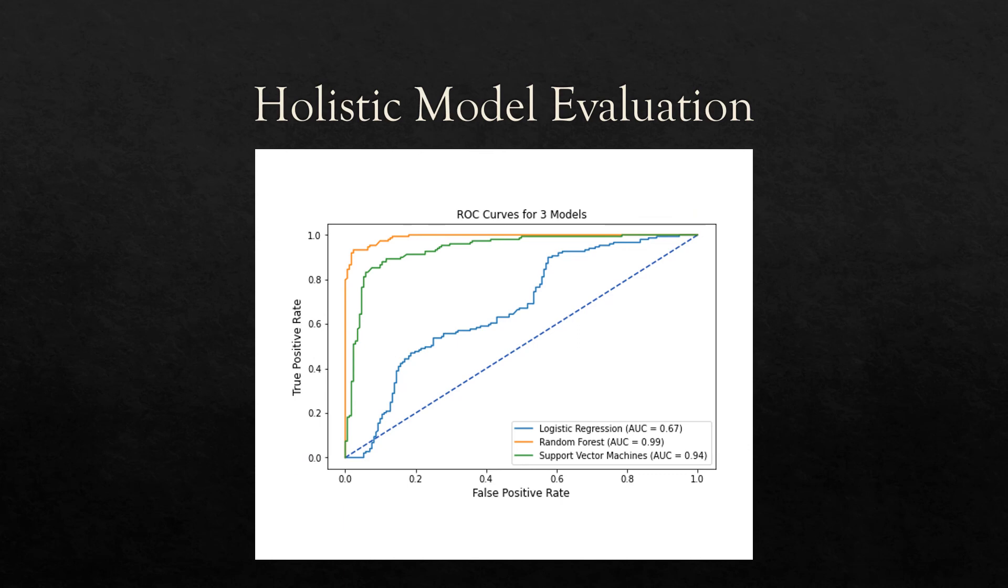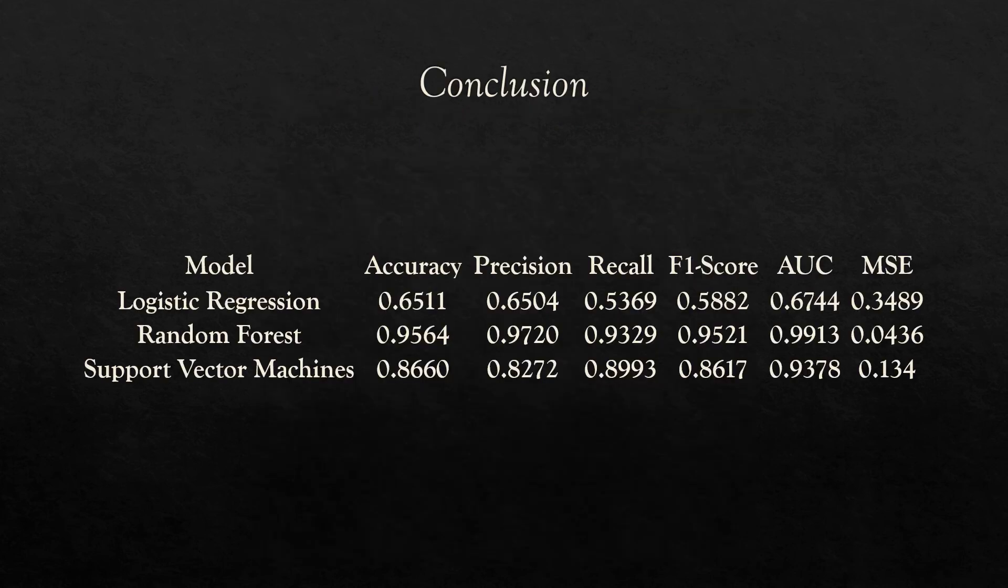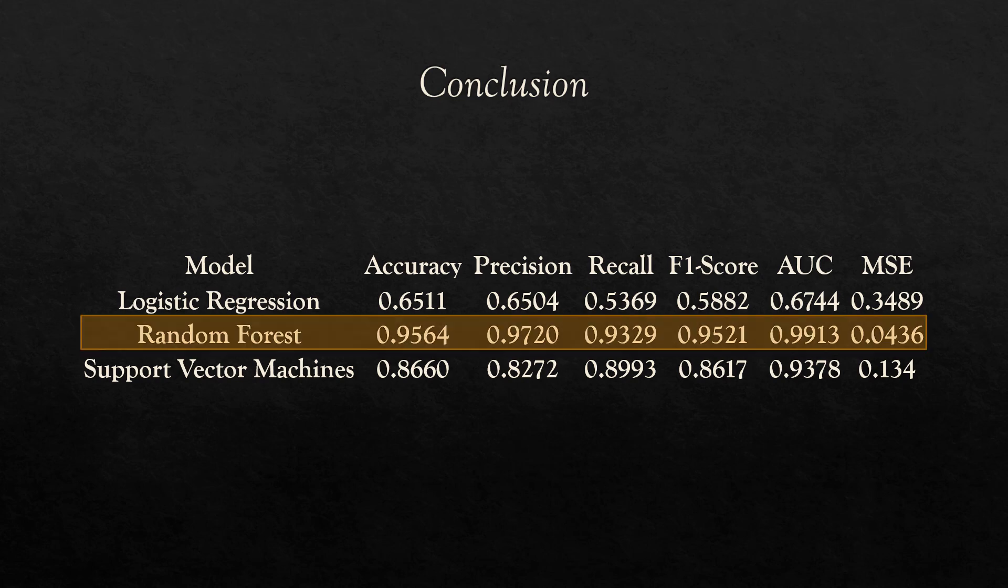The ROC curves of the three ensuing models are plotted alongside each other, demonstrating that the random forest model, colored in orange, captures the highest area under the curve of roughly 99%. Support vector machines come in for a close second with an AUC of 94%. So all things considered—accuracy, precision, recall, F1 score, and AUC—the random forest model is by far the highest performing. Its mean squared error of roughly 4% is the lowest among all three models, thereby reinforcing and solidifying this claim.